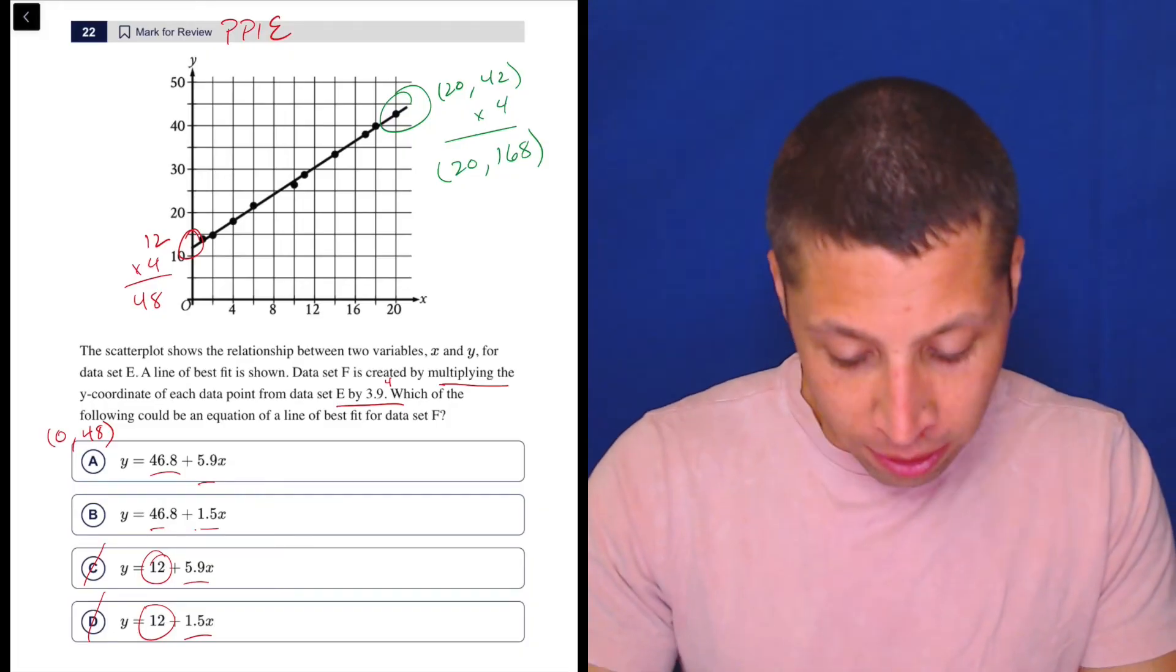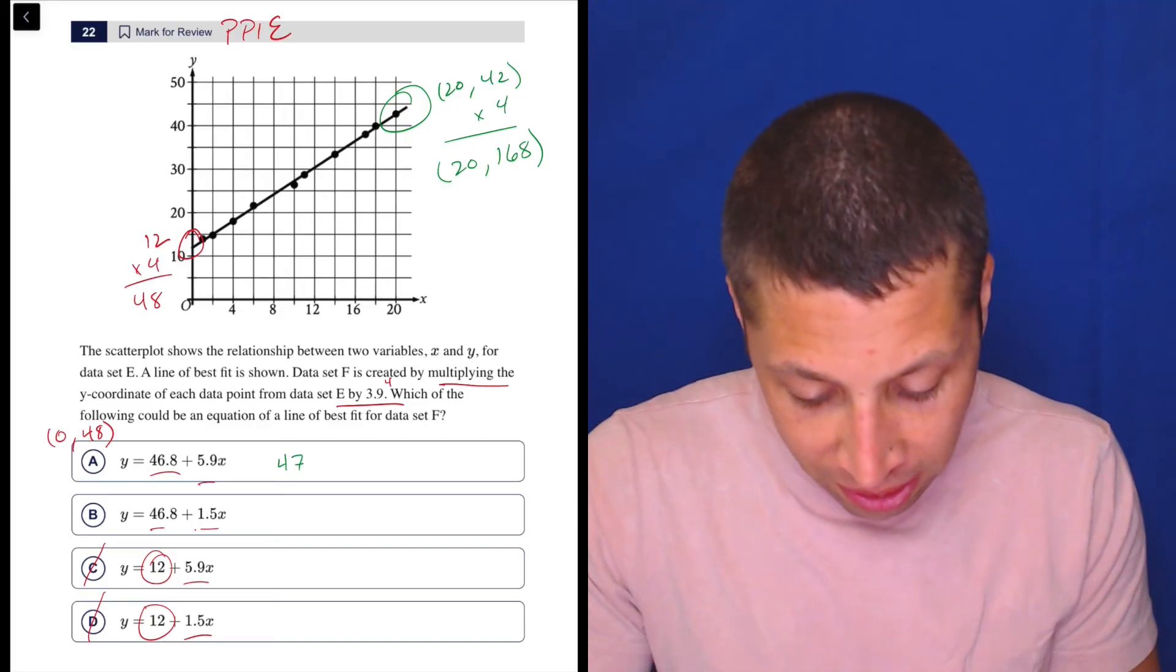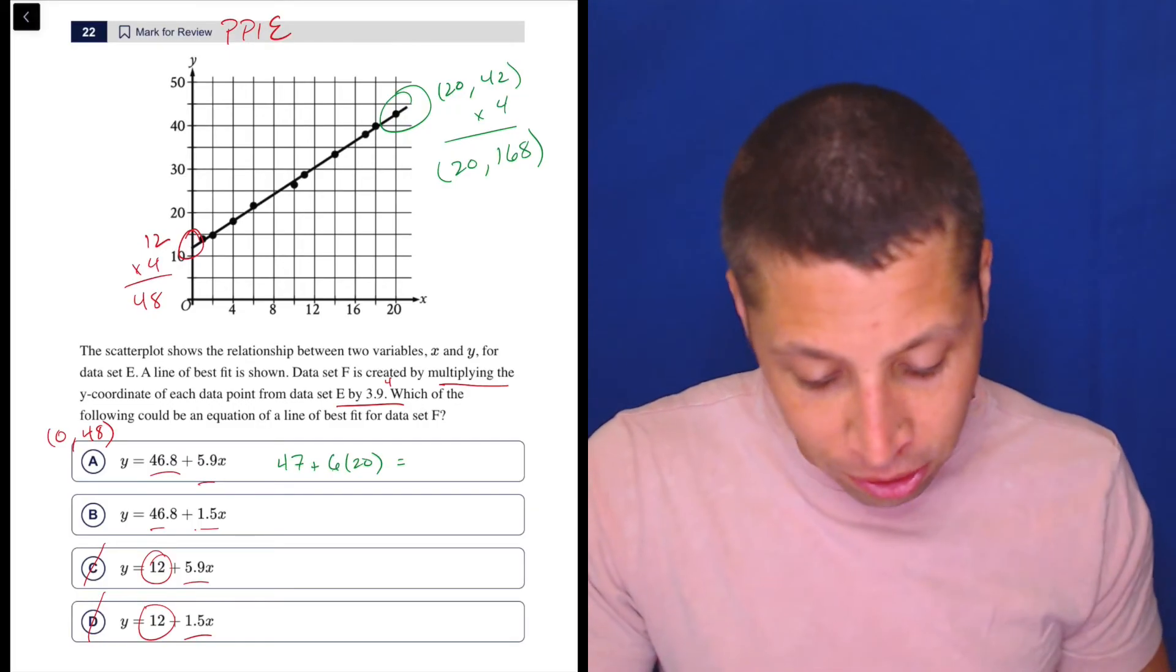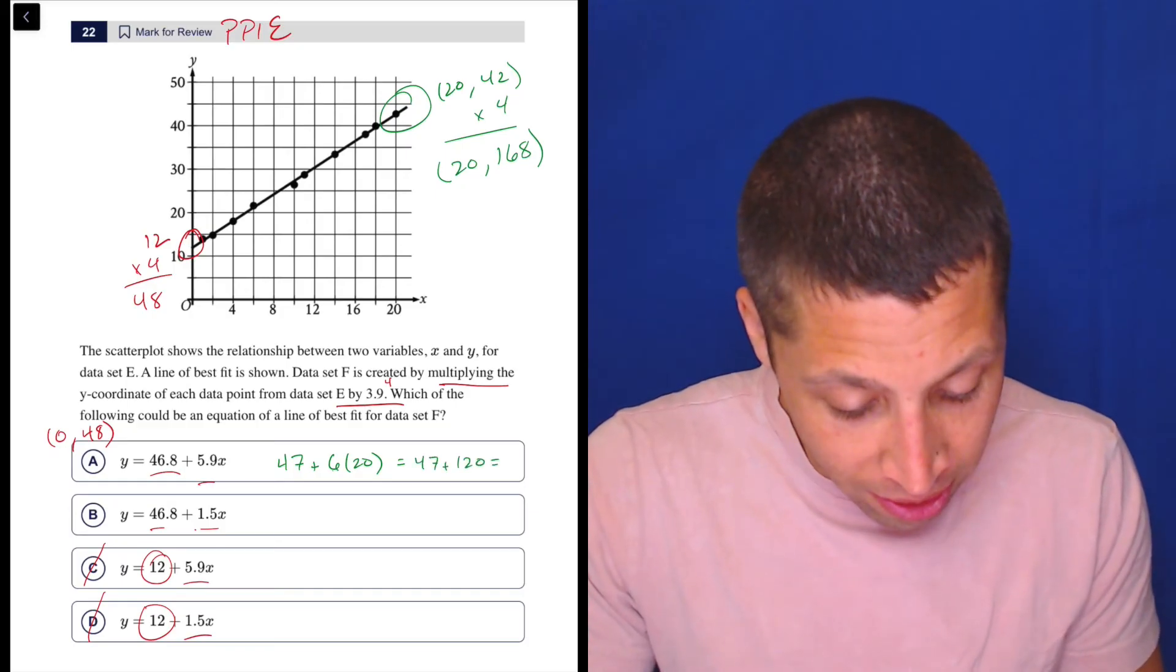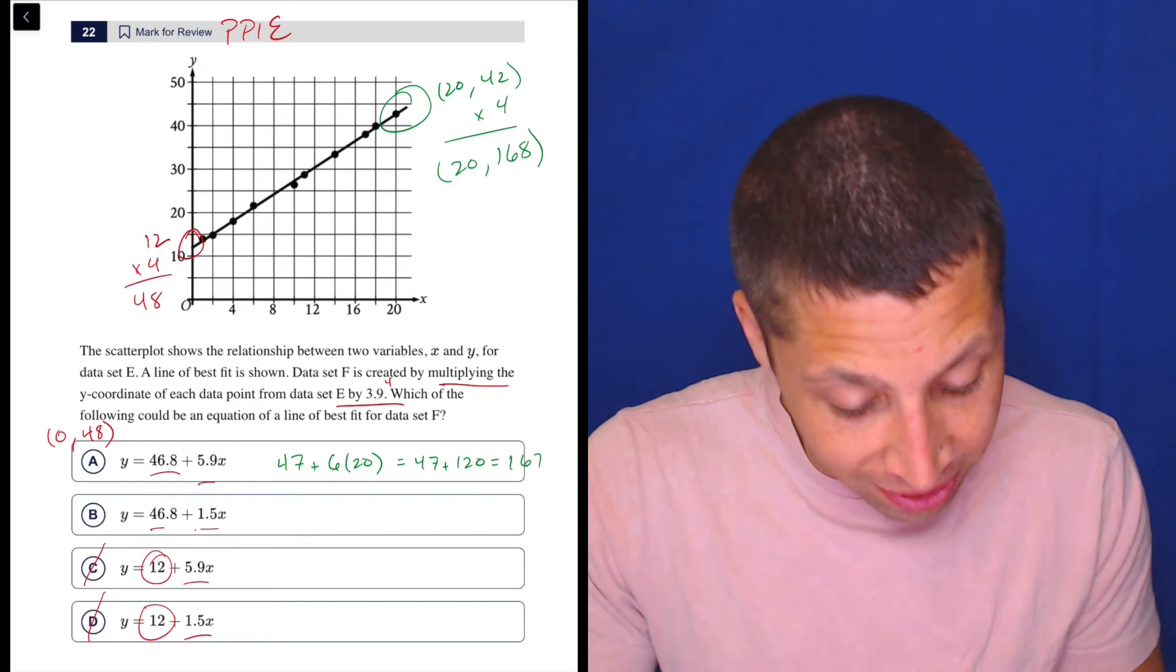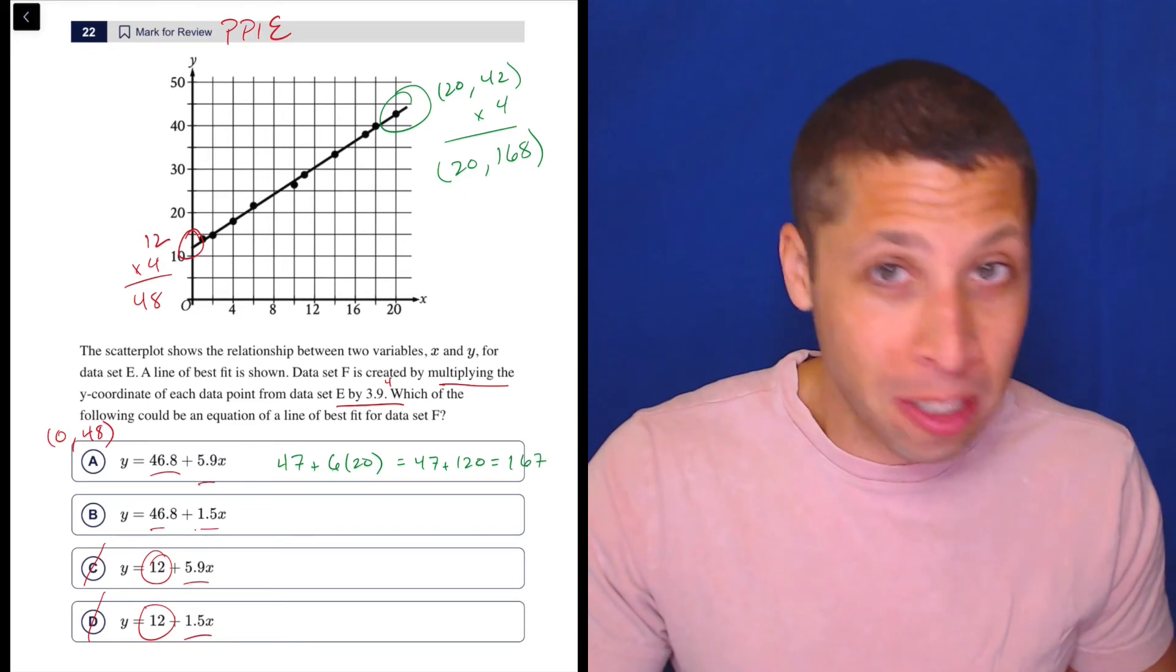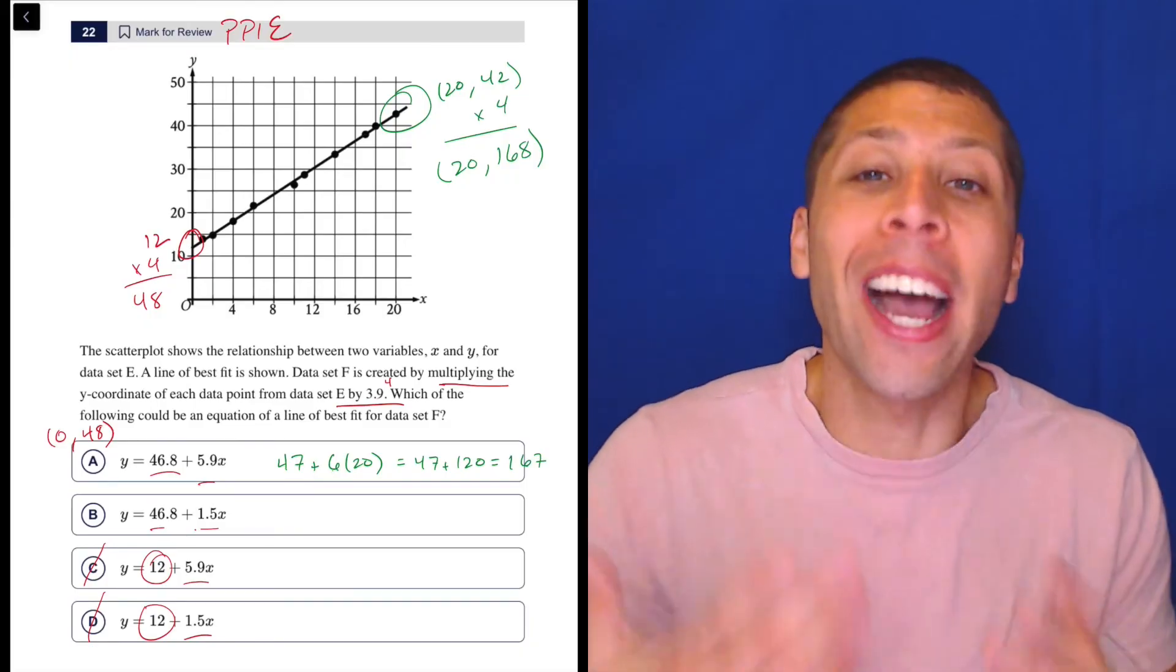So now we're plugging that point into these equations. So we have 47 plus 6 times 20. So 47 plus 120 is 167. So that's pretty close to 168. And I am rounding again. I am just kind of estimating because, I don't know, why not? It seems like it's going to be, it's not going to be that close.